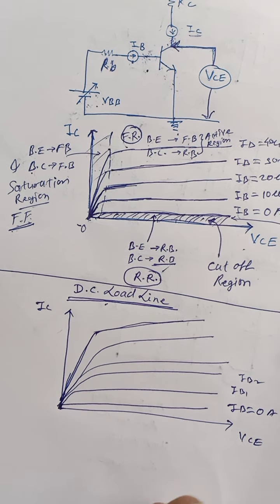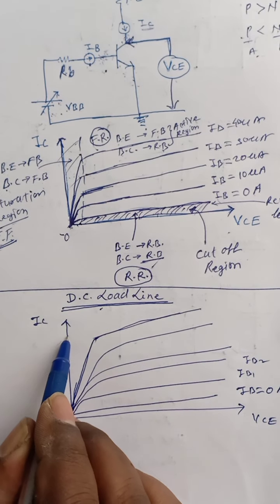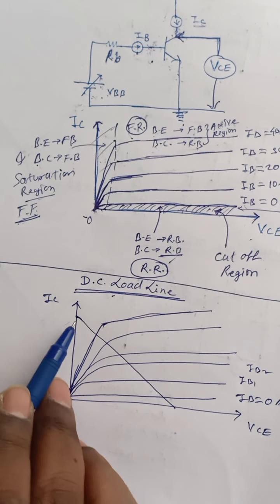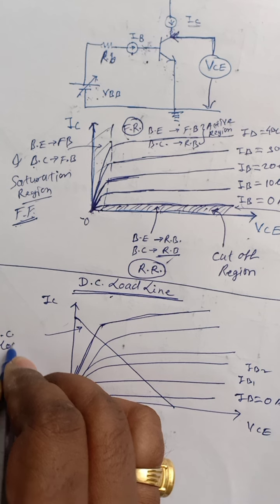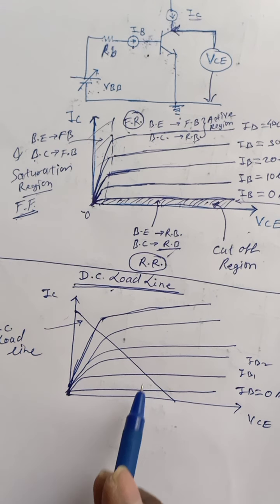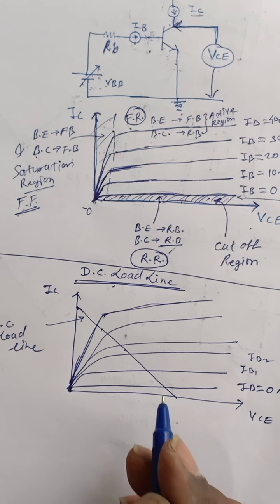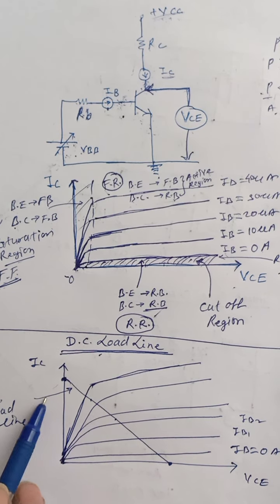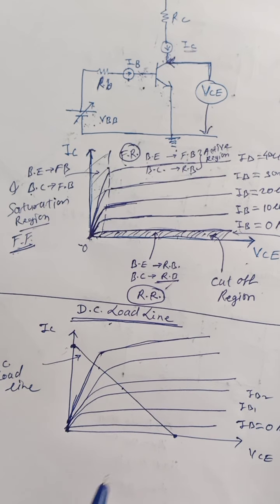That means the transistor operates on this DC load line. To draw any line we require two points, so we consider two points at the two extreme conditions.